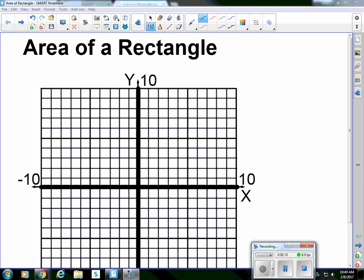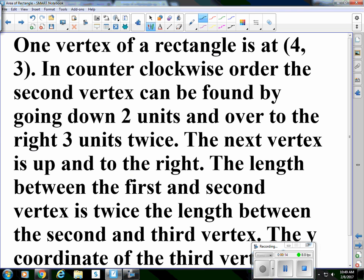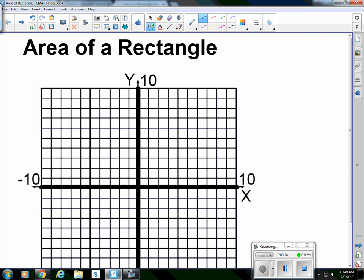We only know the coordinates of the vertices. For example, one vertex of a rectangle is at (4, 3). In counterclockwise order, the second vertex can be found by going down two units and over to the right three units twice. So let's come back to this one, and we go down two and over three, down two and over three. So there's our second vertex.